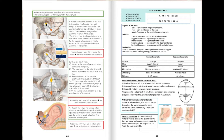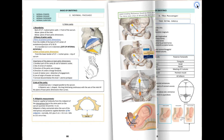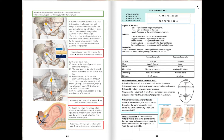Applying this to the normal sub-occipital bregmatic diameter in a normal occipital anterior position: the sub-occipital bregmatic diameter enters the pelvis in the oblique diameter. The occiput, which is anterior, meets the pelvic floor first, rotates one-eighth of a circle, and comes under the symphysis pubis. It hinges, and the face delivers by extension of the head.